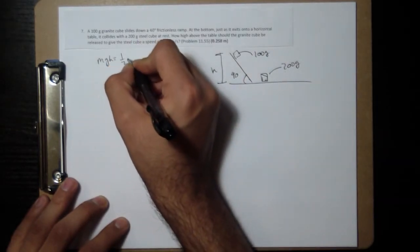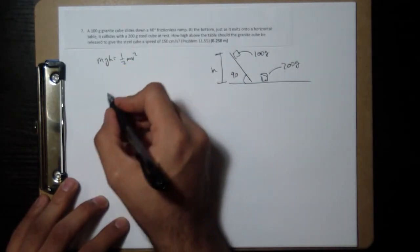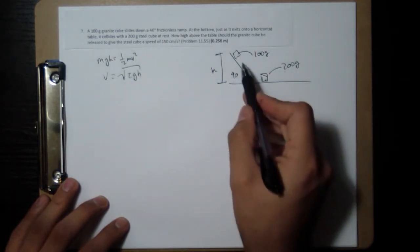and you get v is equal to square root of 2gh at the bottom, where this is the original height.